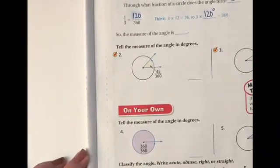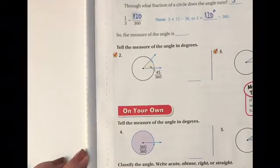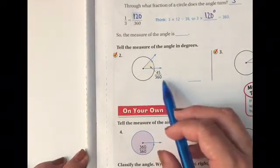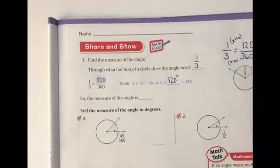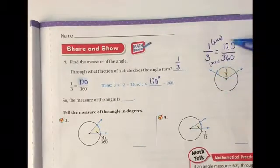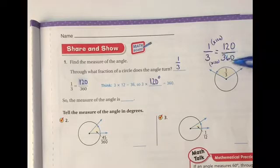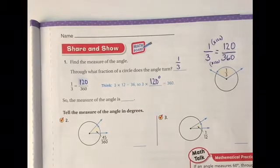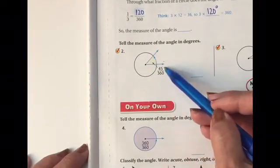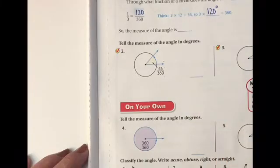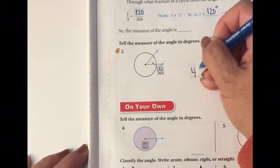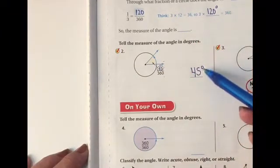So now we move on to number 2. Tell the measure of the angle in degrees. Oh my goodness. I look at my denominator, and it's already 360 degrees. I know I have to turn it into 360 degrees, because an entire circle is 360 degrees. So whatever the numerator is over the denominator of 360 degrees, that's going to be your degrees. So we look here, and they already told us, the measurement of this angle is 45 over 360. So I already have the answer. The numerator is 45, so the degree is 45 degrees. Don't forget your degree sign.